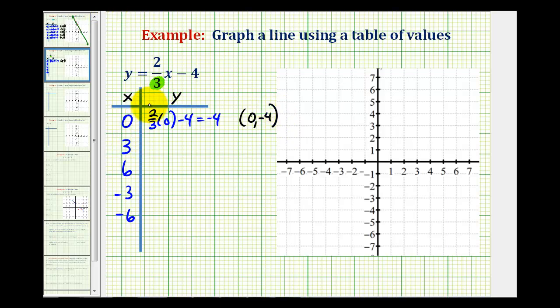Now, we'll substitute 3 for x, so we'd have 2/3 times 3, but I'm going to put 3 over 1 minus 4. And notice how this 3 and this 3 simplify to 1, so we have 2 minus 4, which is equal to negative 2. So, our line must contain the point with an x coordinate of positive 3 and a y coordinate of negative 2.